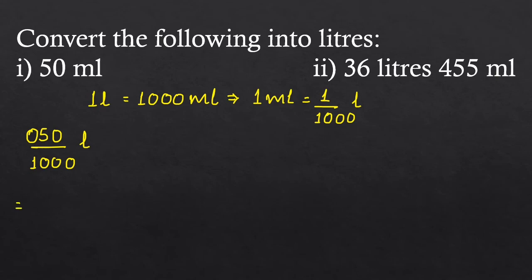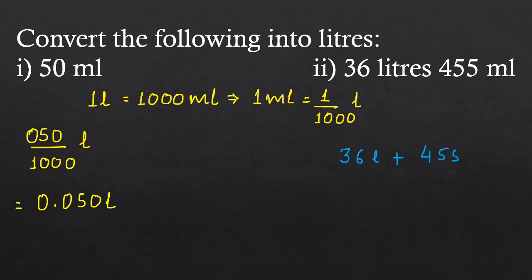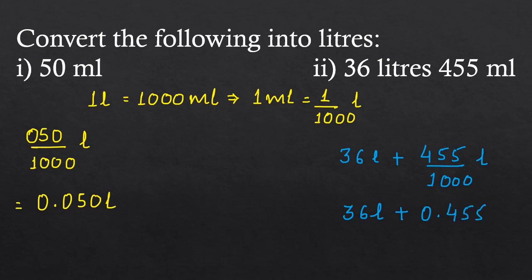The next part is 36 liters and 455 milliliters. It equals 36 liters plus 455 upon 1000 liters, and 455 upon 1000 equals 0.455 liters. So 36 plus 0 gives 36.455 liters.